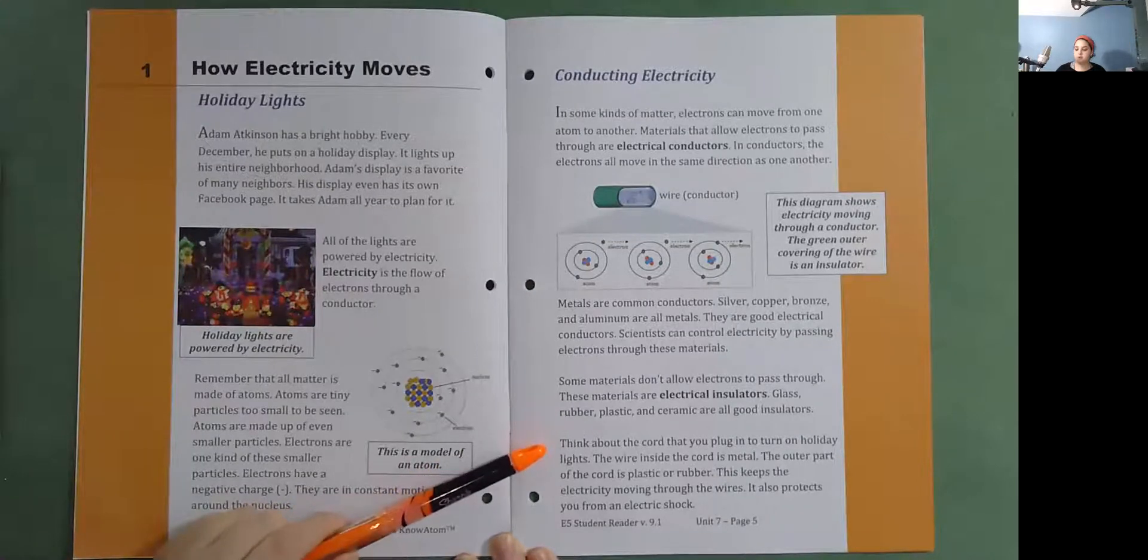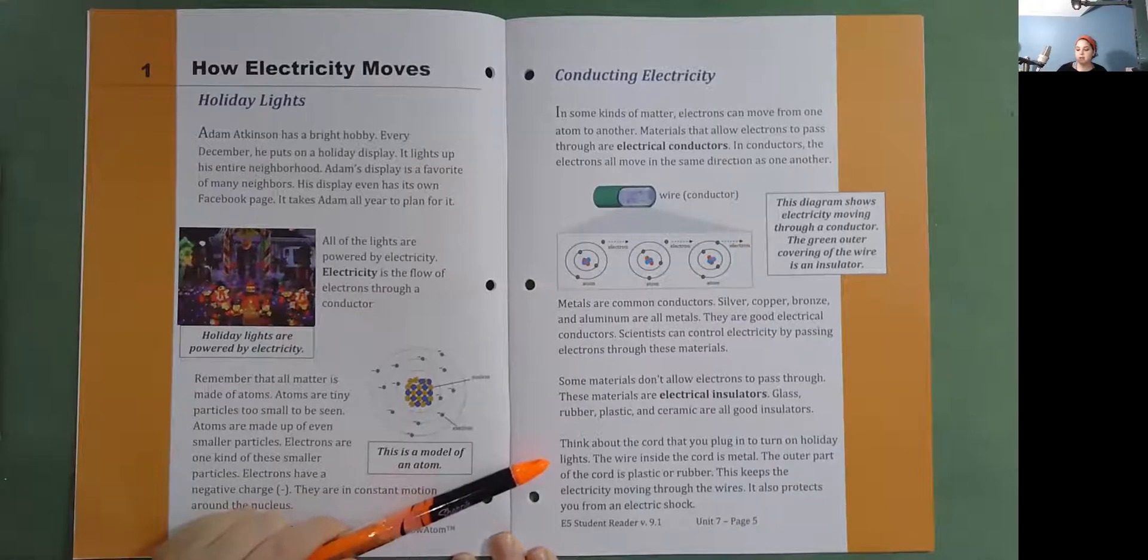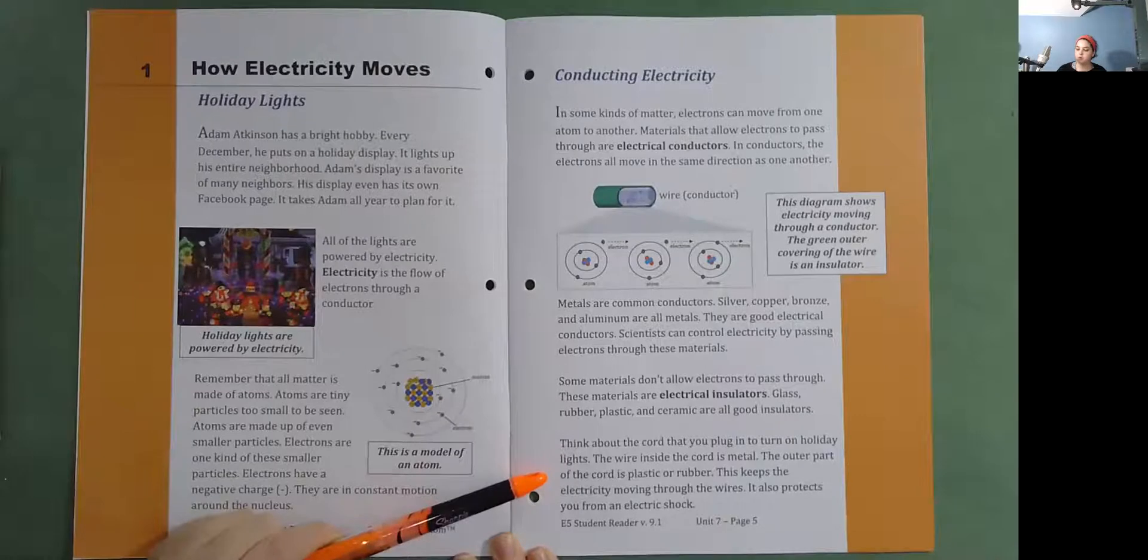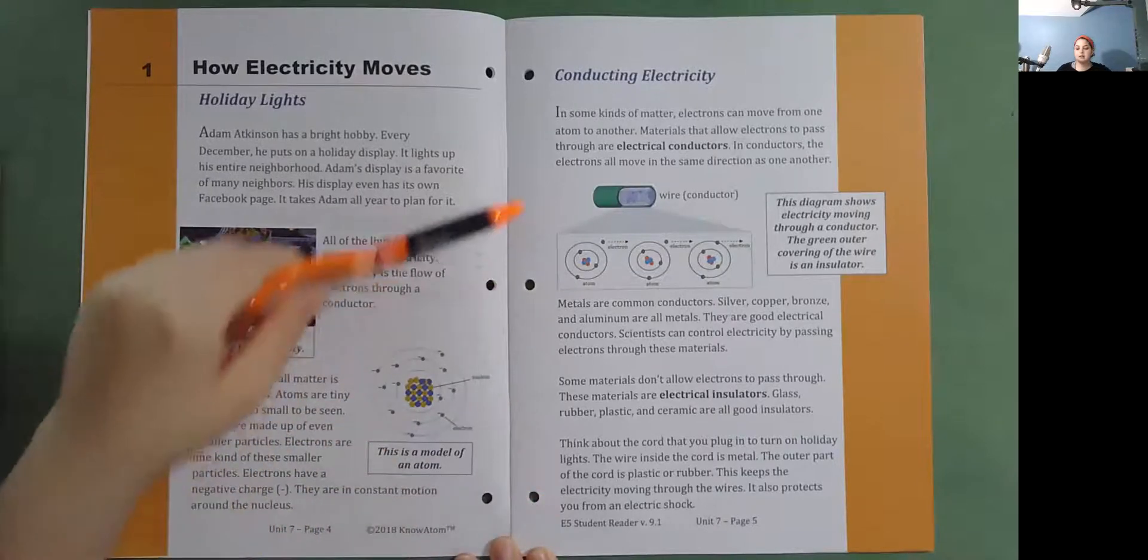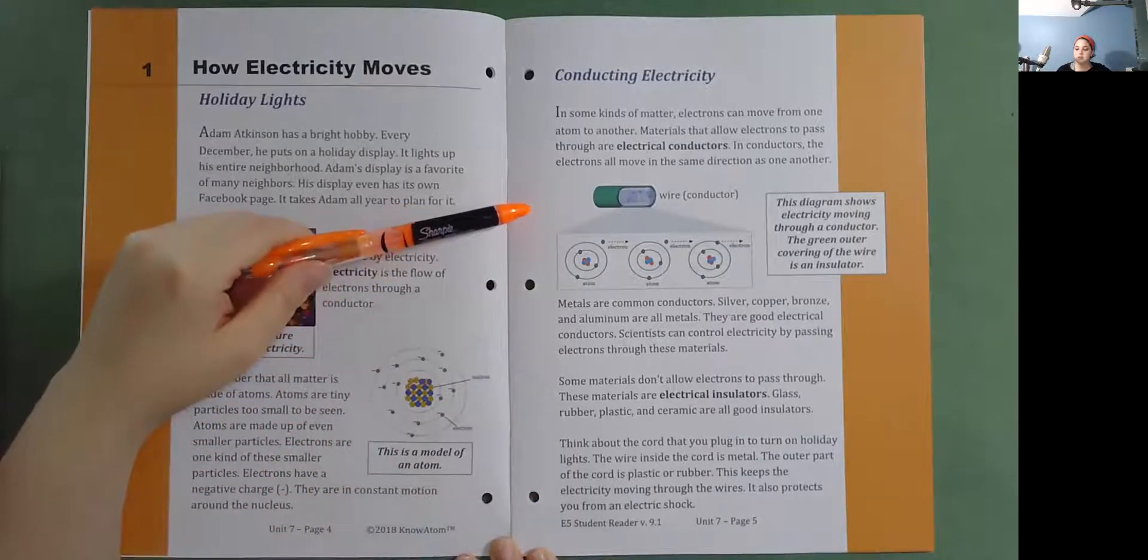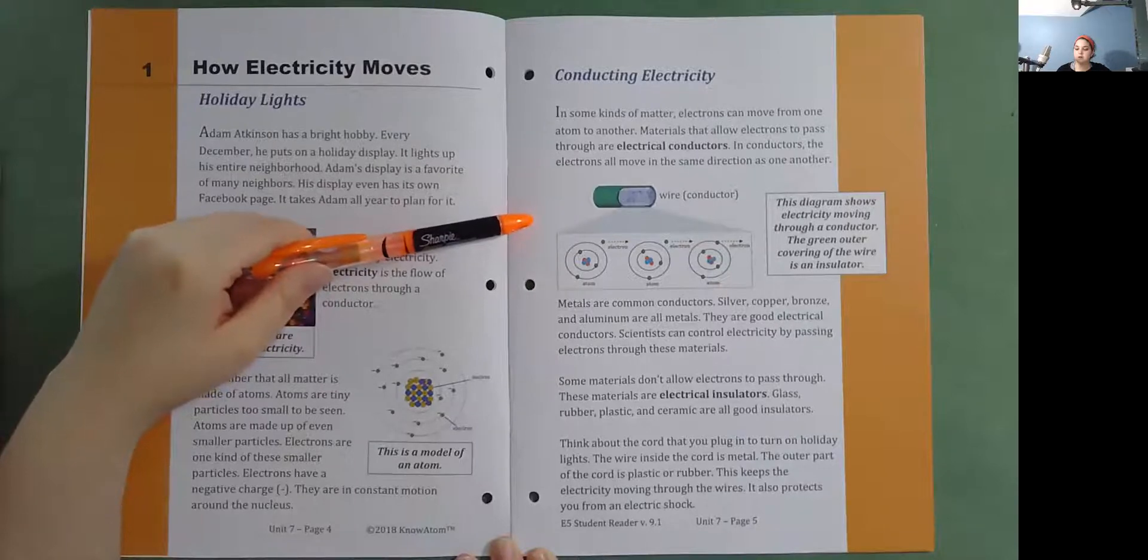Think about the cord that you plug in to turn on holiday lights. The wire inside the cord is metal. The outer part of the cord is plastic or rubber. This keeps the electricity moving through the wires. It also protects you from an electric shock. This diagram shows electricity moving through a conductor. The green outer covering of the wire is an insulator.